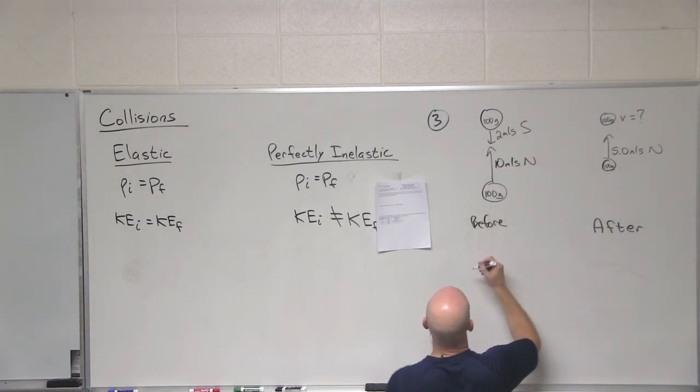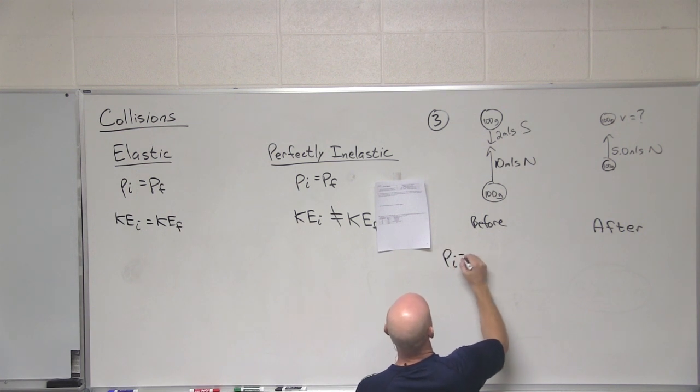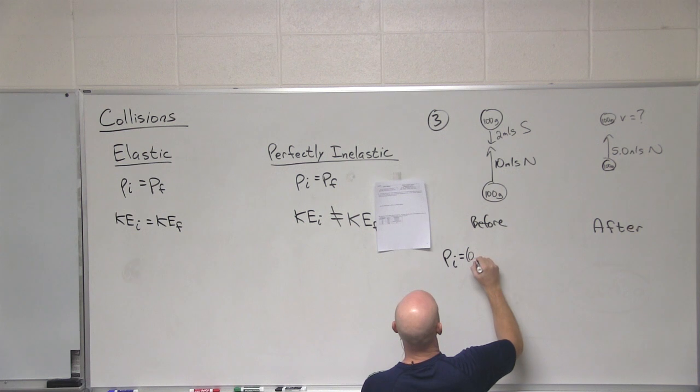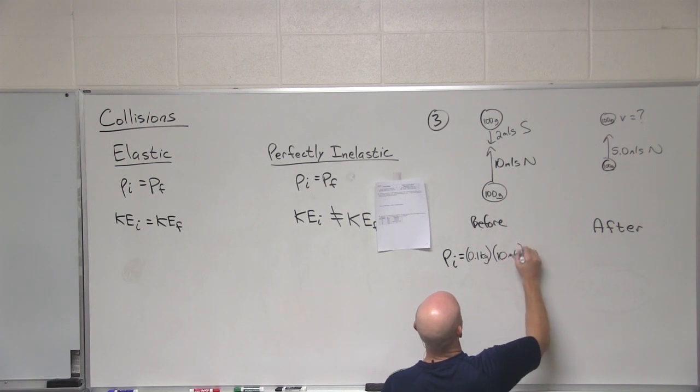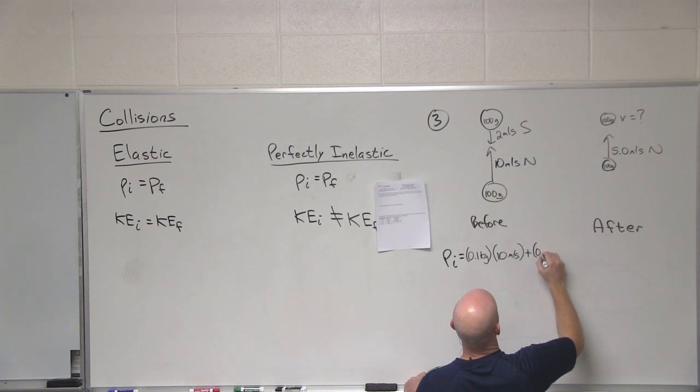And so in this case, your initial momentum, 100 grams is the same as 0.1 kilograms. So, I'll start with the first object. What's his velocity? Great. And the second object, also 0.1 kilograms.